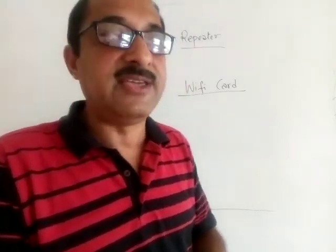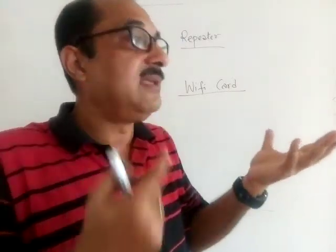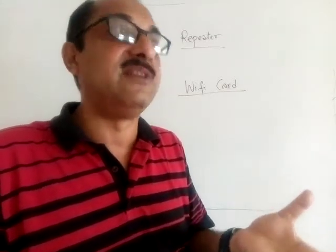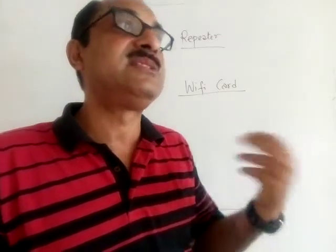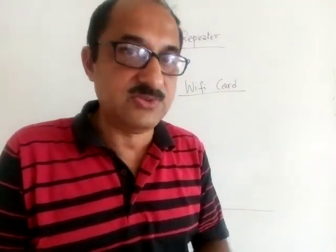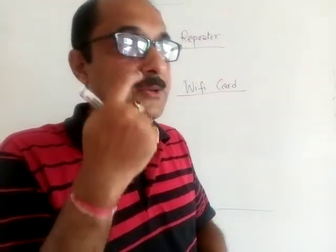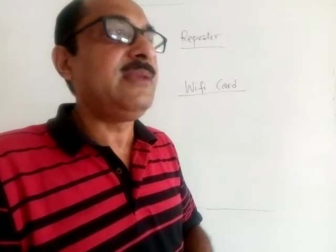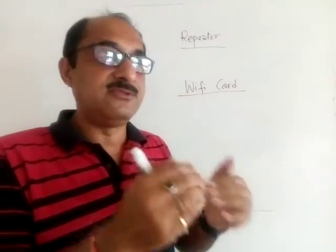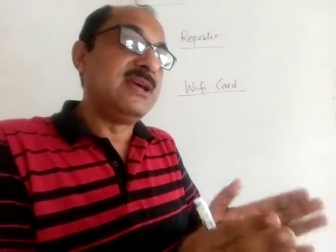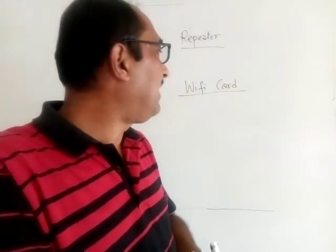If it is not inbuilt, it can be attached via the USB port — in that case it will be an external Wi-Fi card. The purpose of this Wi-Fi card is that it is basically a kind of transmitter and receiver. It transmits and receives radio waves. Wi-Fi is basically a range of frequency — around 2.5 to 5 GHz — within that range you transmit waves to propagate data.